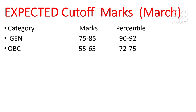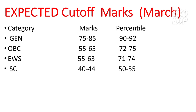For OBC, you need 72 to 75 percentile, which requires scoring 55 to 65 marks. For EWS, the cutoff is similar to OBC: 71 to 74 percentile, requiring 55 to 63 marks. For SC, you need 50 to 55 percentile with marks of 40 to 44. For ST, your percentile should be 40 to 45, and your marks will be 30 to 35.